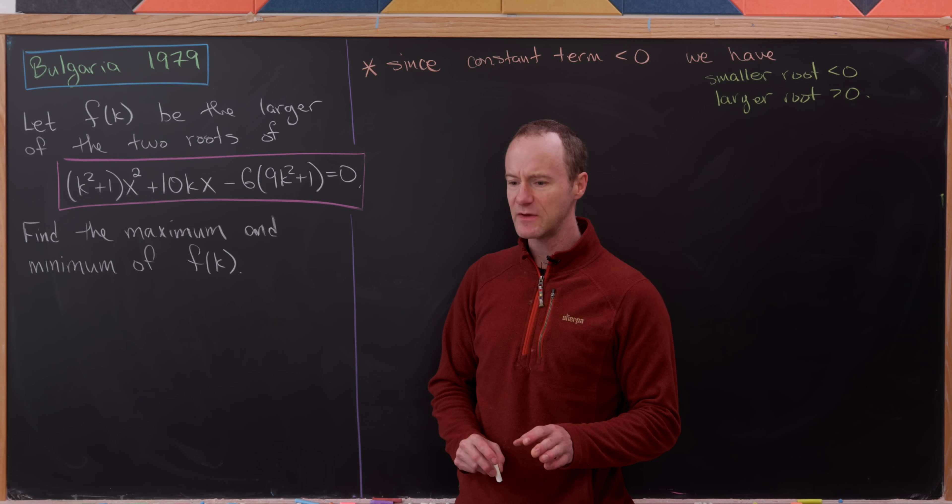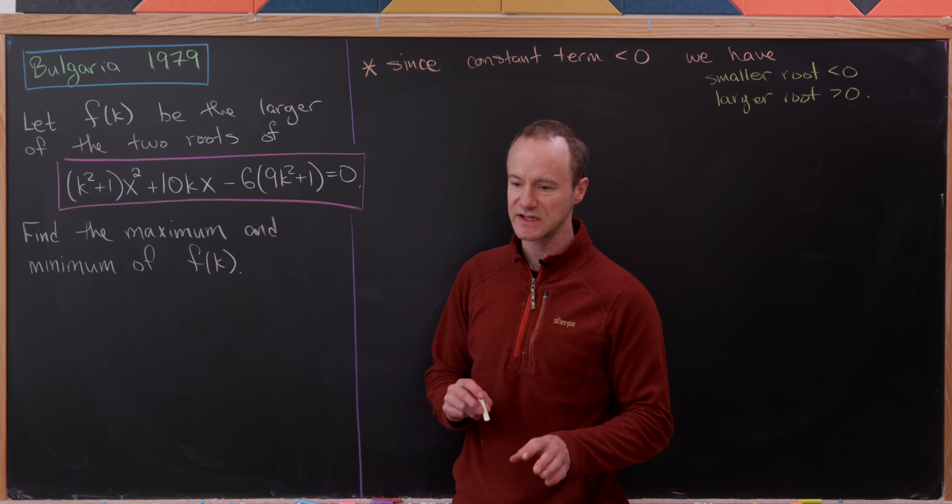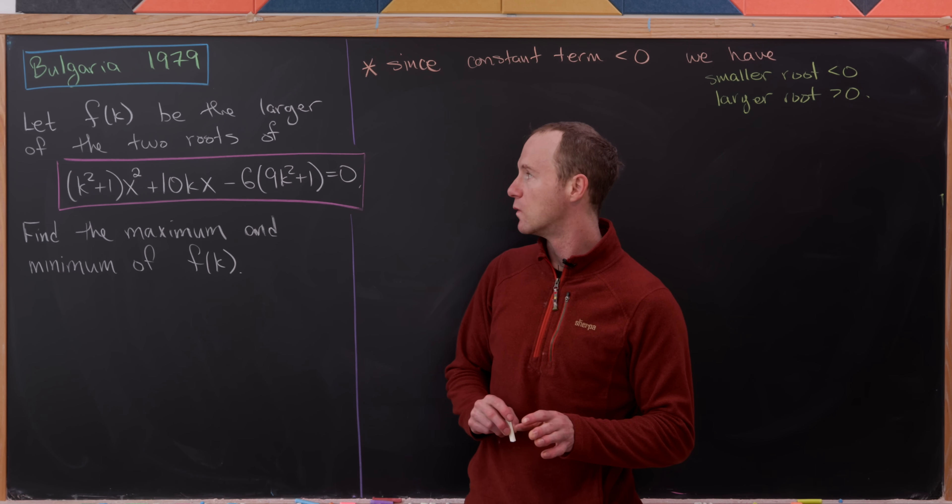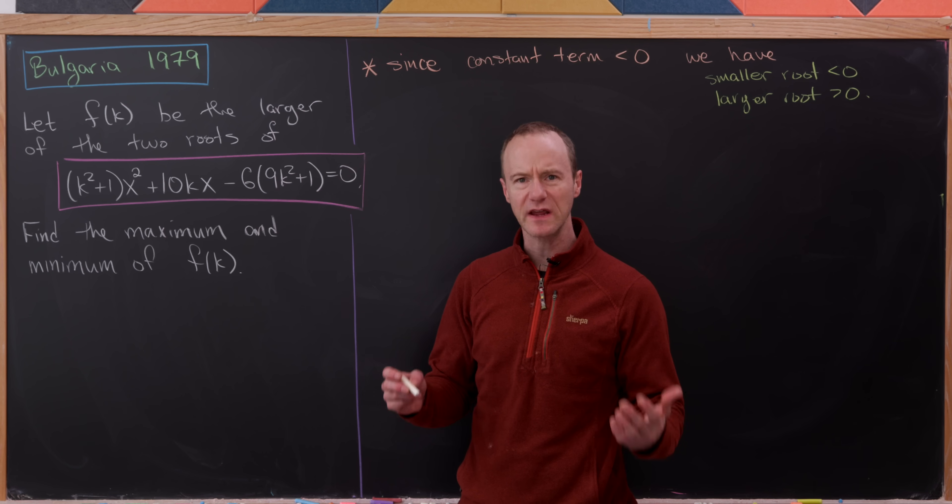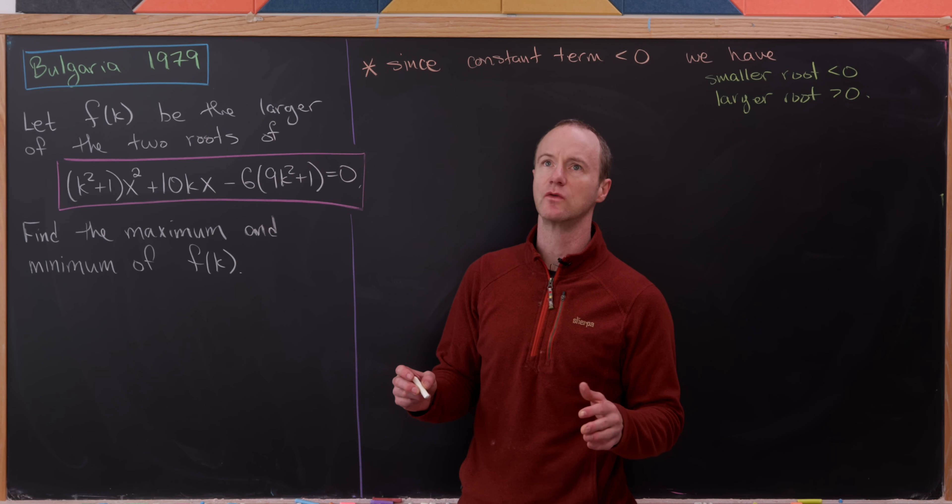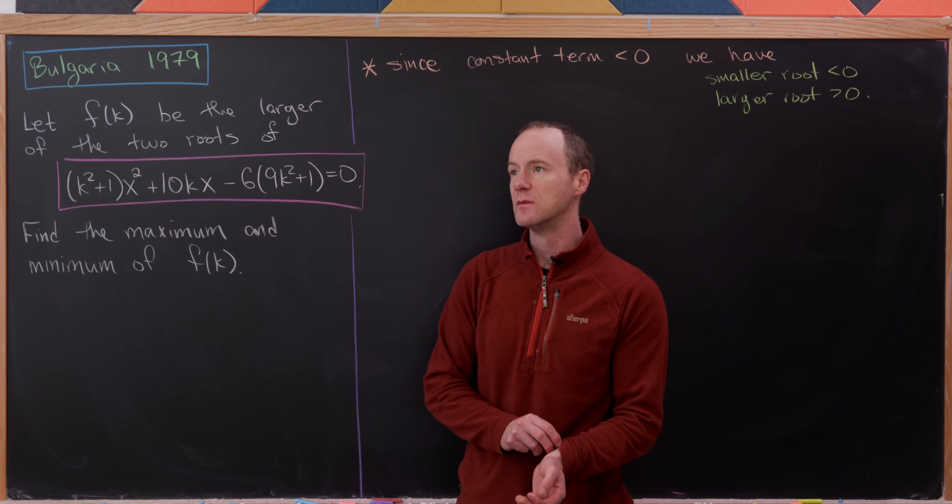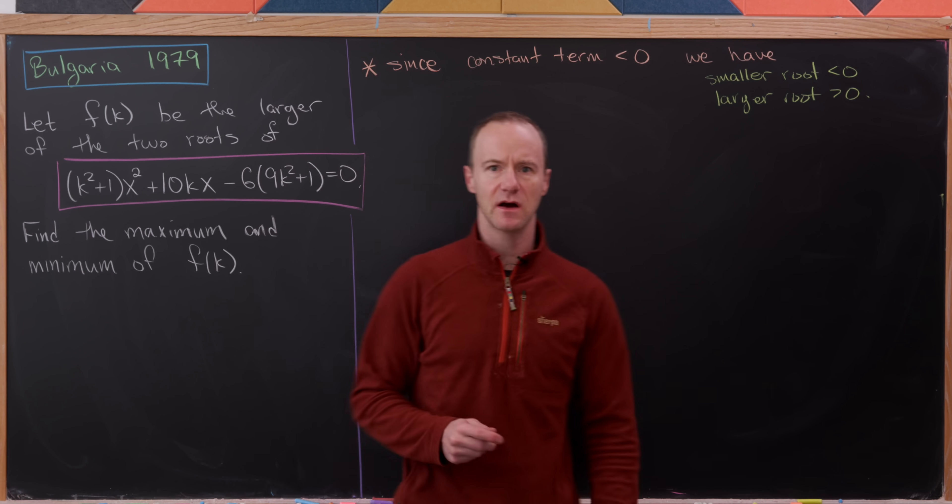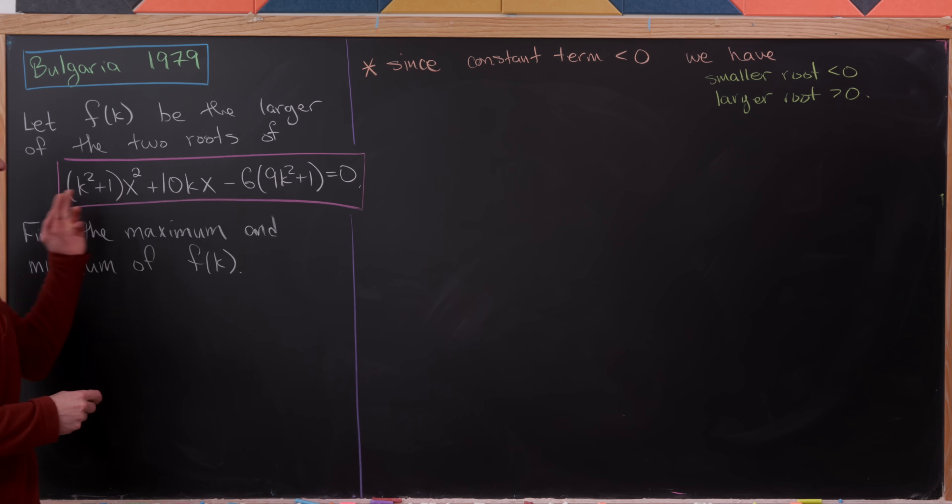The first thing to realize is that since we're talking about larger and smaller, we're always going to have real roots. If we're working with complex roots, there's no real notion of larger and smaller. But if we're going to have real roots, we need to have real values of k. So a good place to start is to find the values of x that produce real values of k.